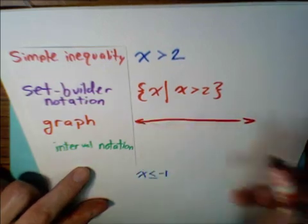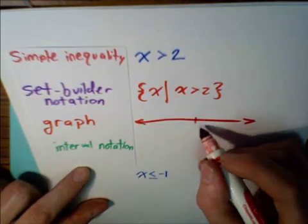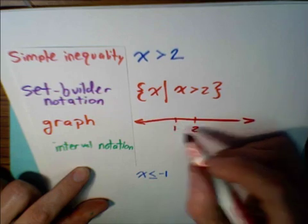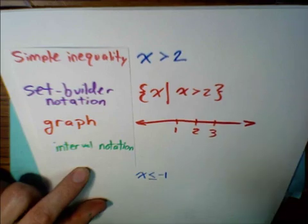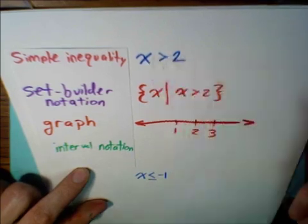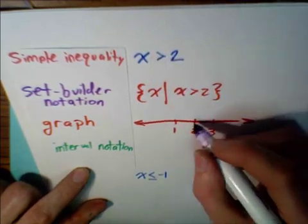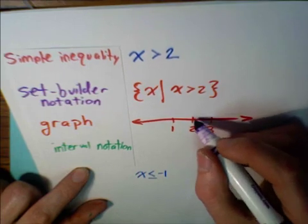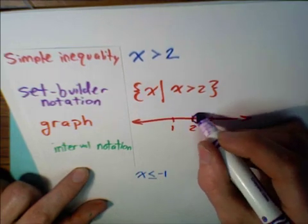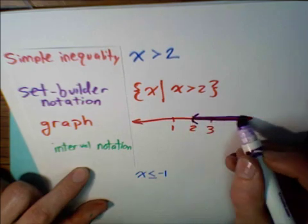Draw a number line. Here's 2. I like to include some points that are in the neighborhood. And then lastly, we see x is greater than 2. So we are going to not include 2. I'm going to use a parentheses. I'm going to shade to the right.